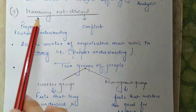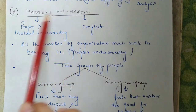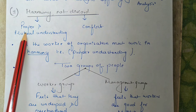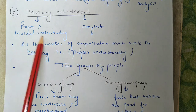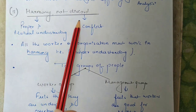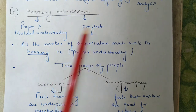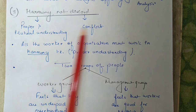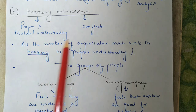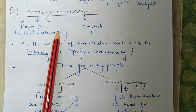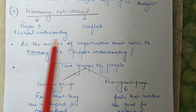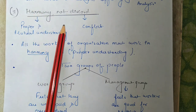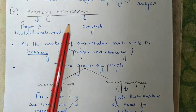The next principle is harmony not discord. Now what is harmony? Harmony means proper and mutual understanding, and discord means conflict. According to this principle, those who work together in an organization must work in harmony, that is with mutual give and take and proper understanding.